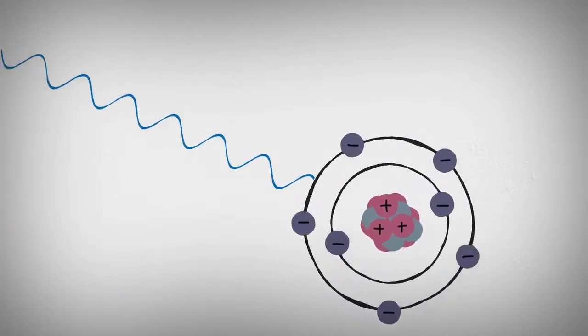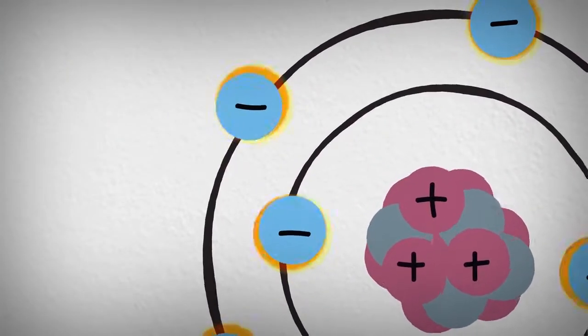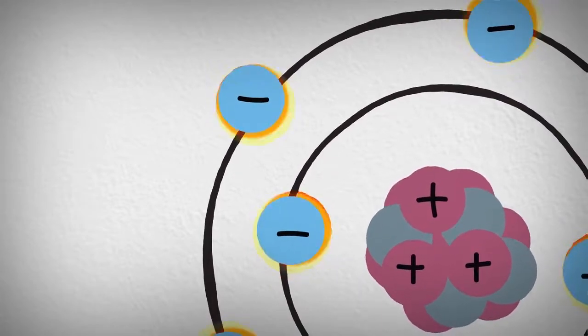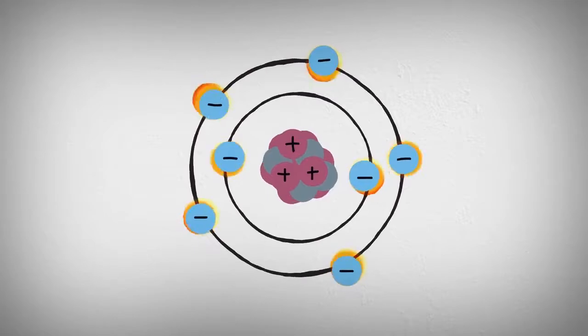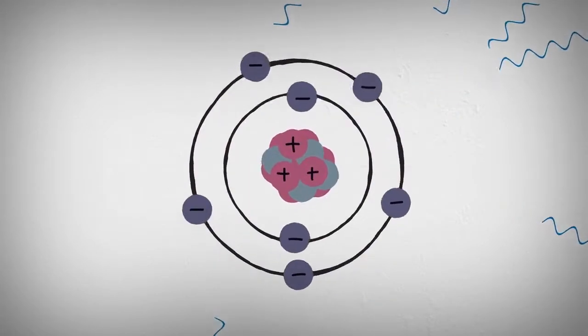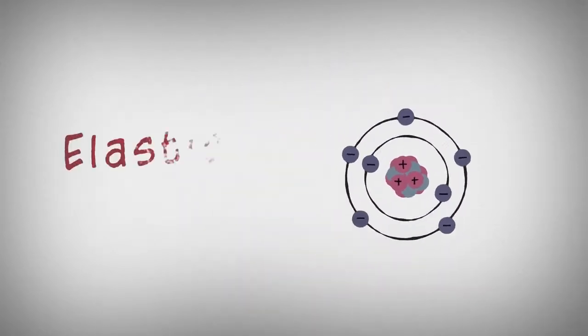When an X-ray encounters an atom, its energy is absorbed by the electrons. Electrons occupy special energy states around an atom. Since this is not enough energy for the electron to be released, the energy must be re-emitted in the form of a new X-ray with the same energy as the original. This process is called elastic scattering.